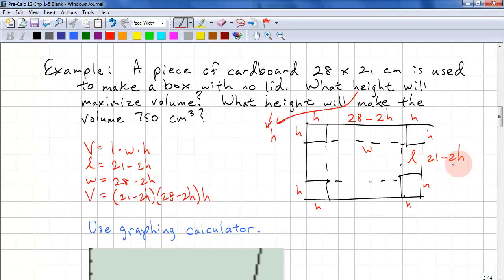If we look at this statement, h can't be bigger than 11, 10 and a half to be exact. Because if h is 11, 2 times 11 is 22, we have 21 minus 22, that would be negative 1. So that would be negative 1 length. That's something that we don't want.